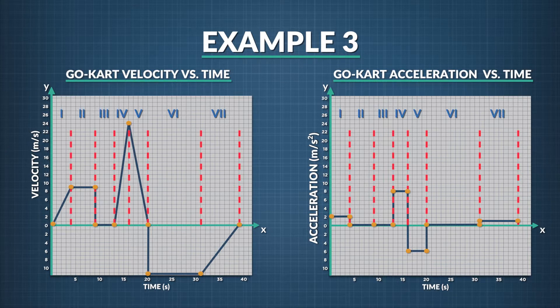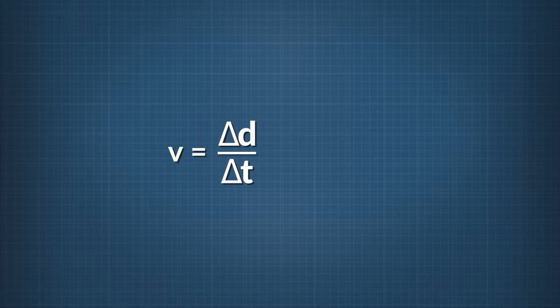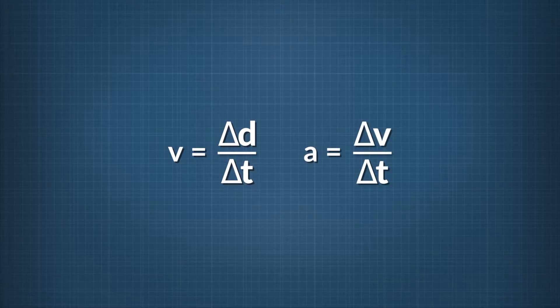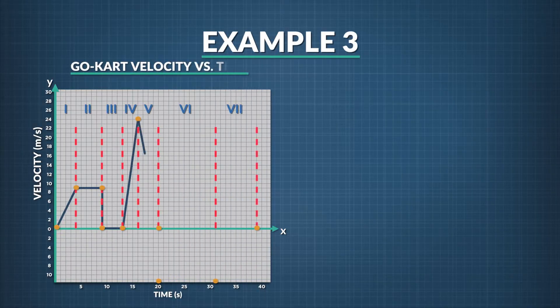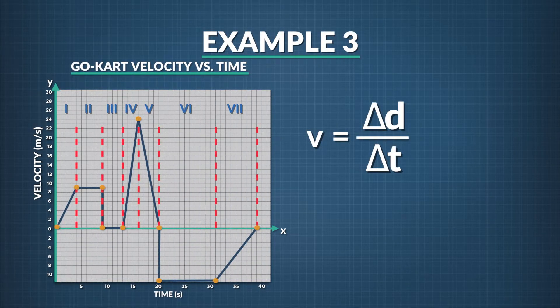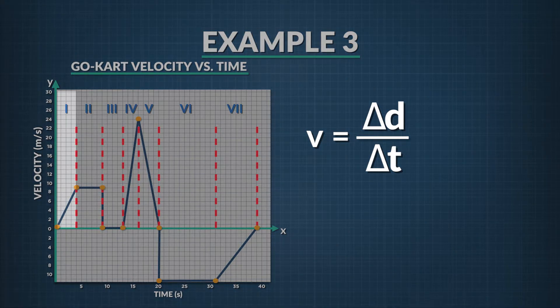First, let's recall a couple definitions. Velocity is defined as the change in displacement divided by the change in time. Acceleration is defined as the change in velocity divided by change in time. Since velocity is more closely related to displacement than acceleration is, we'll start there. We can use the data in the table along with the graph to calculate the velocity of the go-cart in each of the seven regions. In the first region, the slope is positive and also increasing, which means the velocity over region one is positive and increasing.